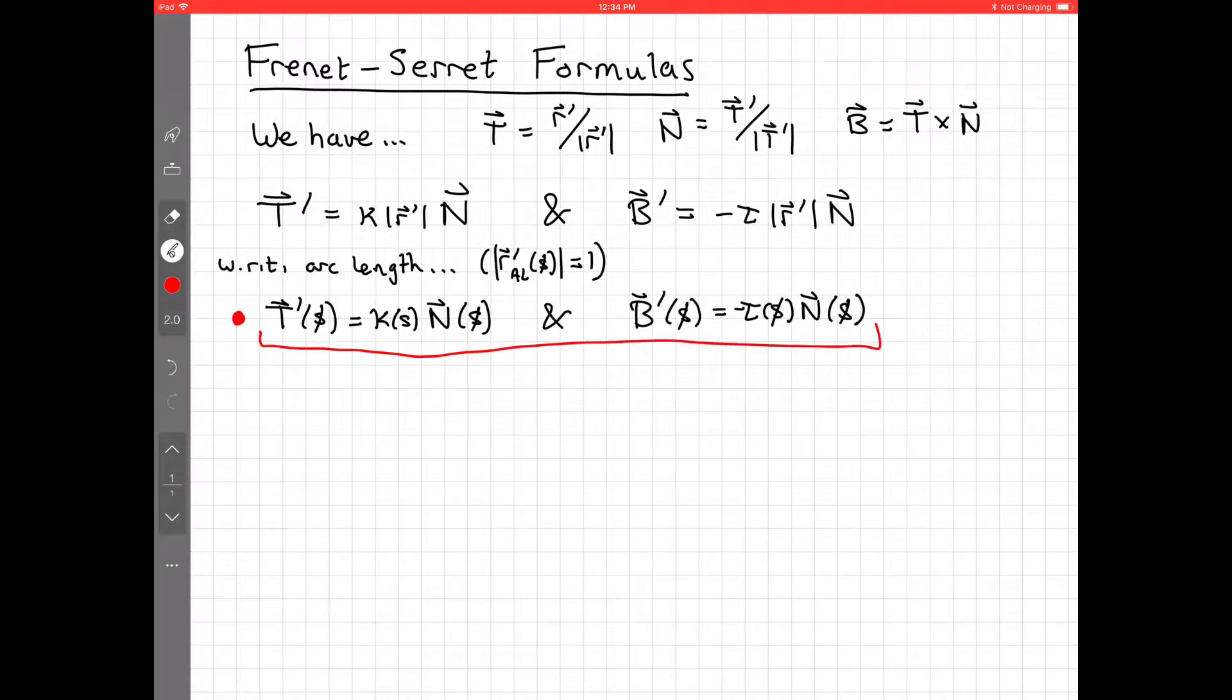We have basically the unit tangent is just curvature times normal, and the derivative of the binormal is just negative torsion times the normal. But we want to keep in mind our more general formulas that don't involve an arc length parameterization.